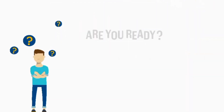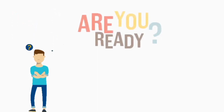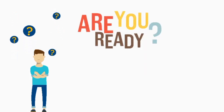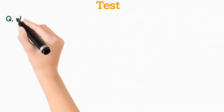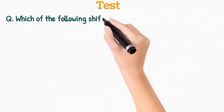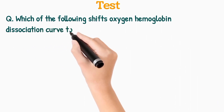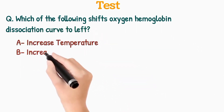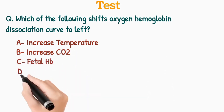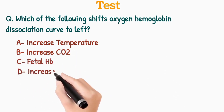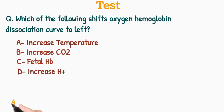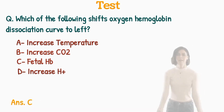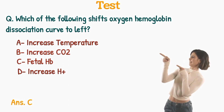Hello folks, now it's time to test your knowledge. Are you ready for a rapid quiz? Fasten your brain belts. Question: Which of the following shifts the oxygen hemoglobin dissociation curve to the left? Options: A. Increase temperature, B. Increase carbon dioxide, C. Fetal hemoglobin, D. Increase H+ ions. Fetal hemoglobin has greater affinity for oxygen, so the curve will shift towards left. The correct option is C — fetal hemoglobin.